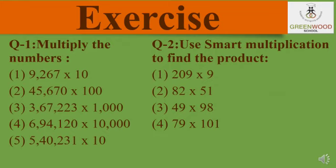Exercise. Question 1: multiply the numbers on the basis of the topics we just saw — that is, multiply the number with 10, 100, 1000, and 10,000. Solve on that basis, while question 2, solve on the basis of smart multiplication.